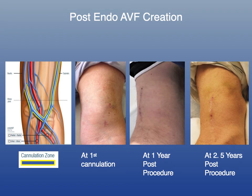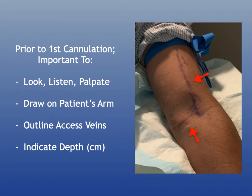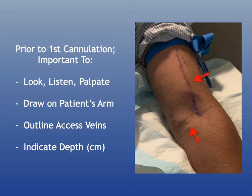When looking at post-endo AVF creation, you can see the cannulation zone — the fistula has a little bulge but it's not as prominent. Before first cannulation, I map out the cephalic vein and draw markings on the patient's arm indicating how deep the vein is, its diameter, and where to access it. Prior to first cannulation, it's important to look, listen, palpate, draw on the patient's arm, outline the access veins, and indicate depth in centimeters. Being present for the first cannulation — whether you, your NP, PA, or clinical reps — is really what you want to do.